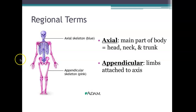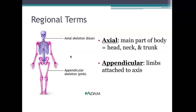Regional terms: axial refers to the main body — head, neck, and trunk. Appendicular refers to the limbs. These are all descriptive words to explain where something is located, ensuring everyone is on the same page, especially in medicine.